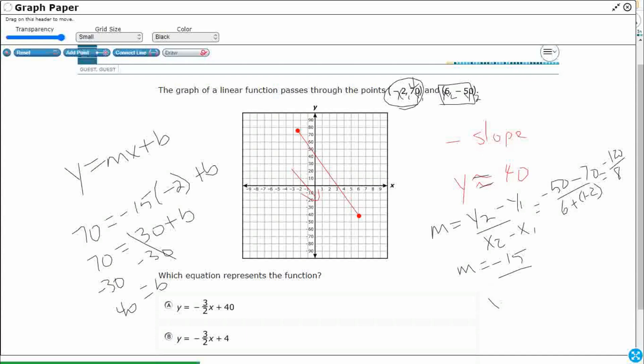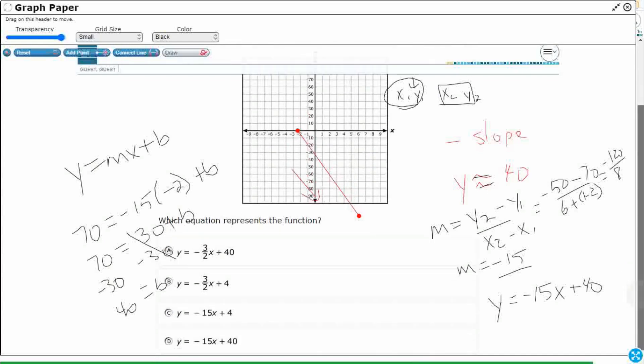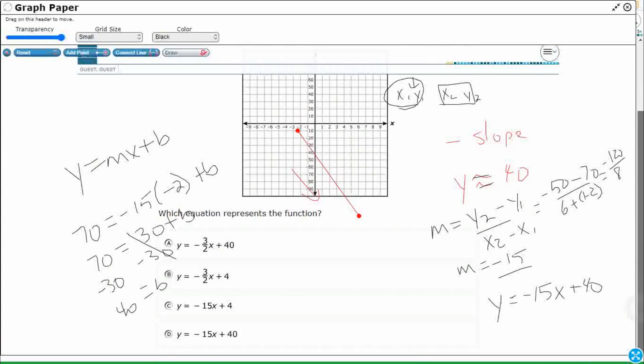So what do I know so far? Well, now I can put my slope-intercept form all together. My m equals negative 15. My b is my y-intercept. So that's going to be my 40. So y equals negative 15x plus 40.